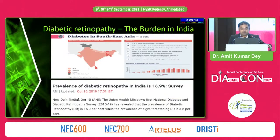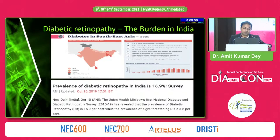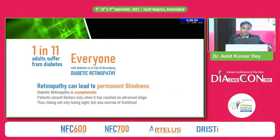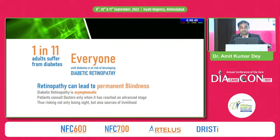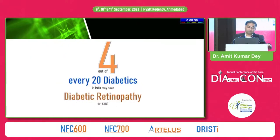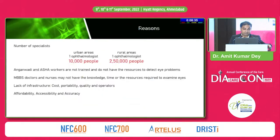Diabetic retinopathy exists as a huge burden in our country. The Union Health Ministry's first national diabetes and diabetic retinopathy survey, completed in 2019, revealed a prevalence of DR of 16.9%, while sight-threatening DR stands at 3.6%. One in 11 adults suffers from diabetes, and everyone with diabetes is at risk of developing diabetic retinopathy that can lead to permanent blindness if left untreated. A critical challenge is that diabetic retinopathy, especially in early stages, is asymptomatic. Four out of every 20 diabetic patients in India may have diabetic retinopathy.